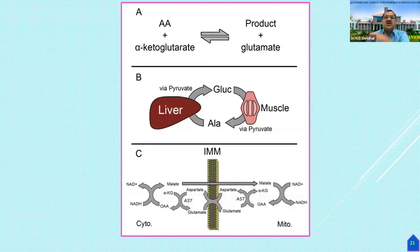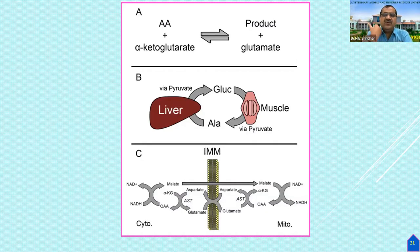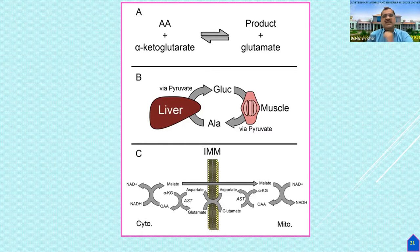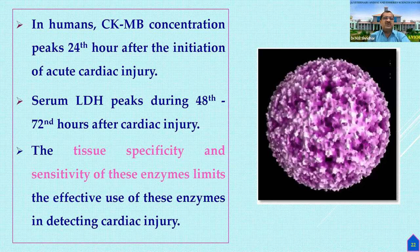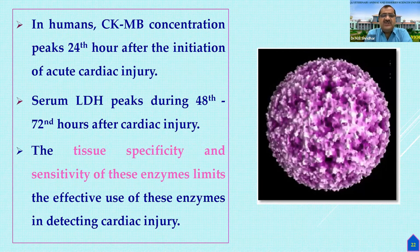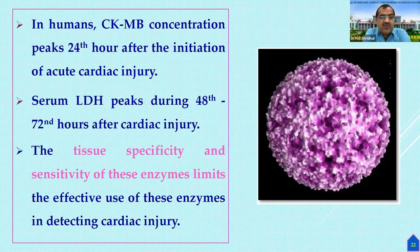Pyruvate combines with NADH, and lactate dehydrogenase releases lactate and NAD — these are the molecular mechanisms making these biomarkers important for diagnosing cardiac damage in FMD-affected cows where characteristic oral lesions may be absent. In humans, CK-MB concentration peaks 24 hours after cardiac injury initiation, while LDH peaks at 40 to 72 hours. The tissue specificity and sensitivity limitations of these enzymes limit their effective use in detecting cardiac injury.